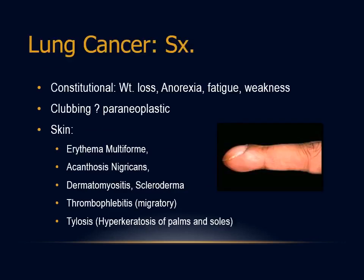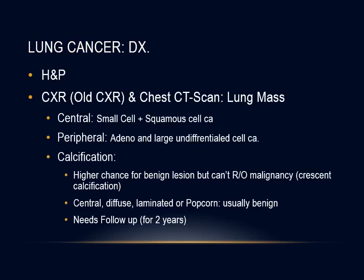Other symptoms from lung cancer include constitutional symptoms such as weight loss, decreased appetite, fatigue, and weakness. Clubbing is sometimes considered a paraneoplastic effect. Skin manifestations include erythema multiforme, acanthosis nigricans, dermatomyositis, and scleroderma-like changes. Thrombophlebitis and migratory tylosis with hyperkeratosis of palms and soles can also be present. When approaching a patient with suspected lung cancer, a full detailed history and physical examination is essential.